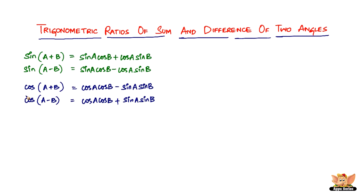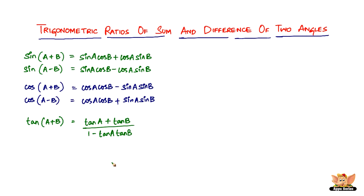Alright, so two trigonometric ratios done. The next one — anybody's guess — is tan. Tan of A plus B is tan A plus tan B divided by 1 minus tan A tan B. And tan of A minus B is equal to tan A minus tan B divided by 1 plus tan A tan B.